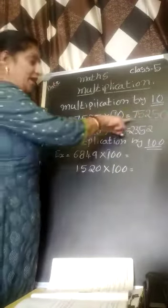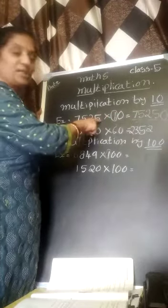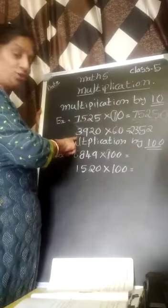Now, for example, if there are zeros in both numbers, how to do this? I am going to show that also.